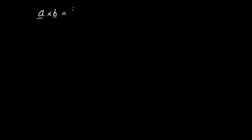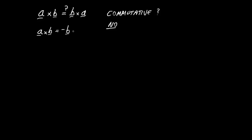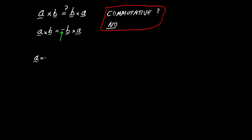Now let's consider whether the cross product has the commutative property. Is A cross B equal to B cross A? It is not. Unlike the dot product and unlike addition, the cross product is not commutative — swapping the order of A and B simply introduces a minus sign. So it matters which order you write them.